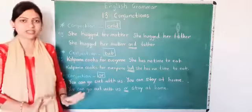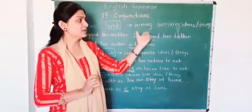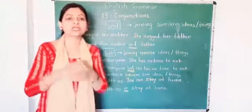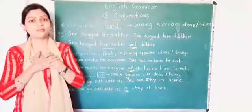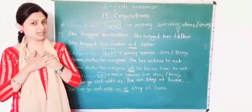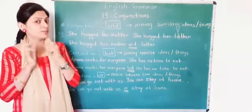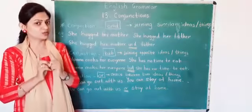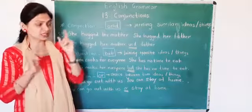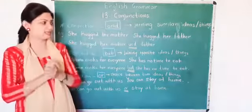So students, let us revise. Listen carefully. Conjunction 'and': we use it to join similar ideas or things. Suppose: I like to play carom and chess — so I like to play both games. These are similar ideas.